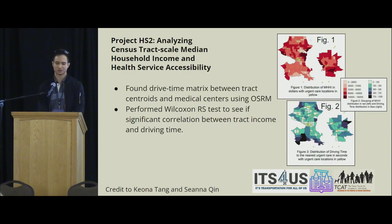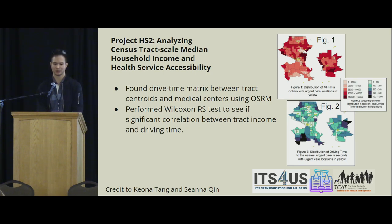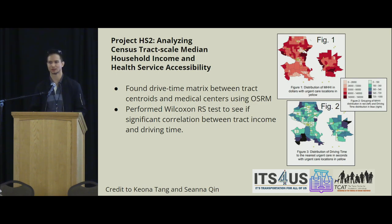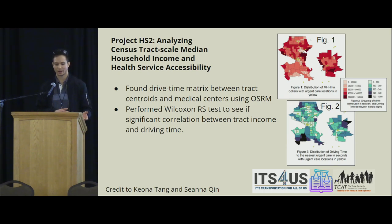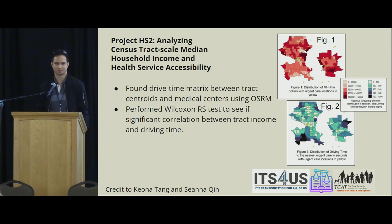Another project used OpenStreetMap data to find a drive time matrix to determine how far people had to drive to medical centers if they needed quick medical care. The students used OSRM, which is open data derived from open data, and that comes with its own set of biases — routers have a very biased way of presenting data.